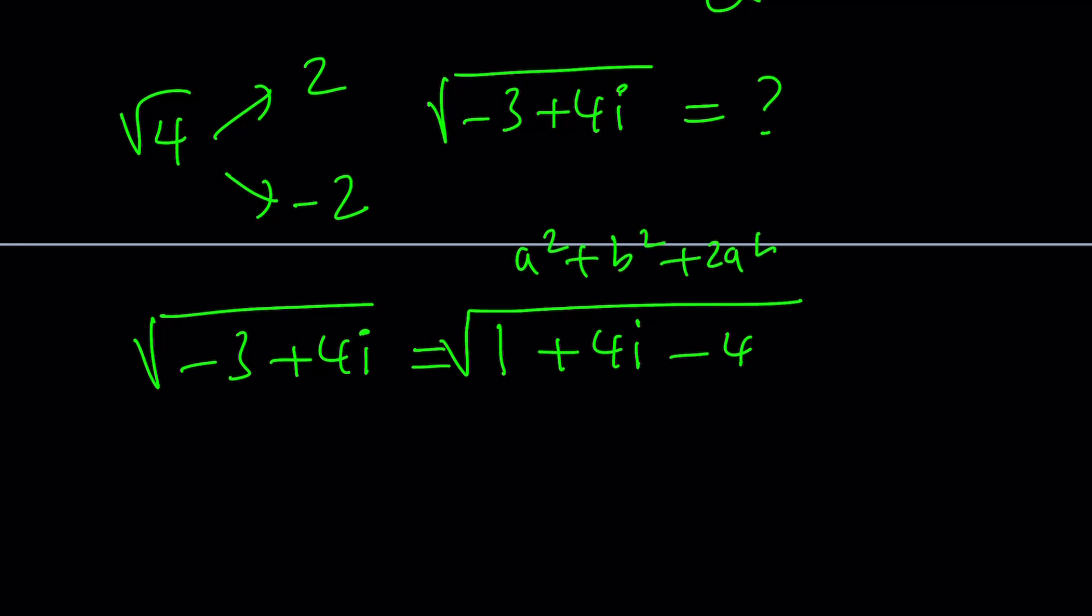Okay. Here's the question. And here's how we can do it. We can actually go ahead and write this in a different way. Like what? I can go ahead and write it as 1 plus 4i minus 4. And then the purpose behind that is to be able to write it as a squared plus b squared plus 2ab. So when I square root it, it's going to come out as a plus b.